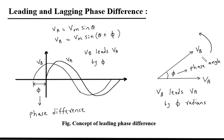This is a Phasor Diagram. In the Phasor Diagram we are taking Va as a reference because it is starting from 0. Here we can see this Va waveform is starting from 0, so that is why we are taking Va as a reference.